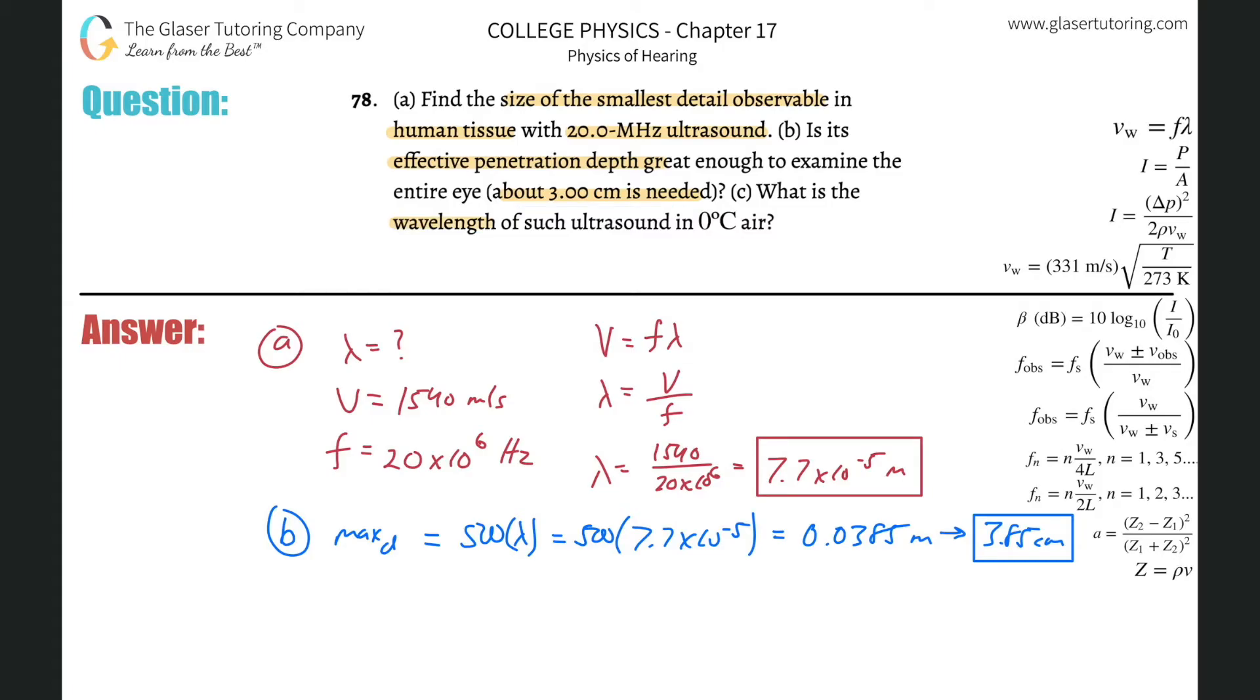And now let us see: What is the wavelength of such ultrasound in zero degrees Celsius air? What we have to do now is realize that we have to find the velocity first by knowing the temperature. So we have that formula that the velocity of the sound is going to be 331 multiplied by the square root of the Kelvin temperature.